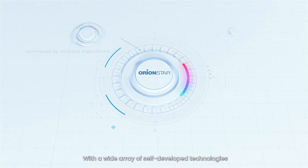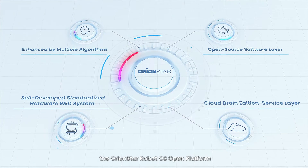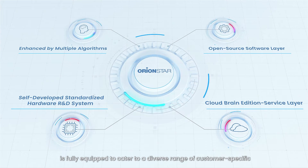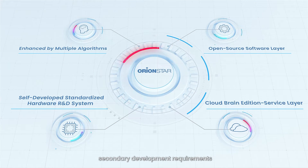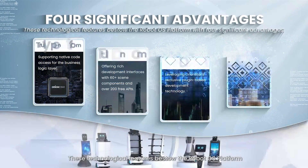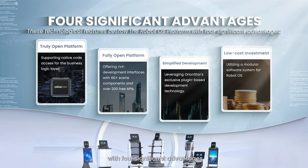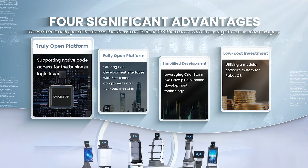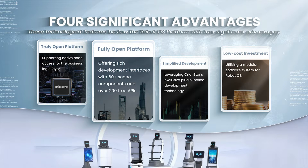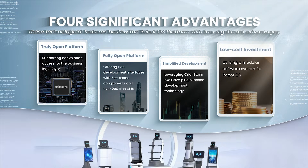With a wide array of self-developed technologies, the OrionStar Robot OS open platform is fully equipped to cater to a diverse range of customer-specific secondary development requirements. These technological features bestow the Robot OS platform with four significant advantages: truly open platform, fully open platform, simplified development, and low-cost investment.